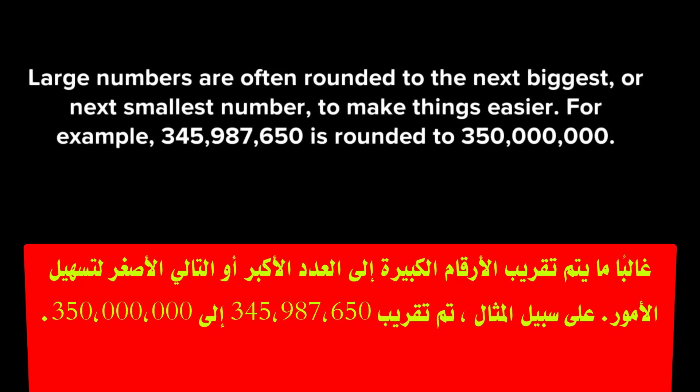Large numbers are often rounded to the next biggest or next smallest number to make things easier. For example, 345,987,650 is rounded to 350 million.